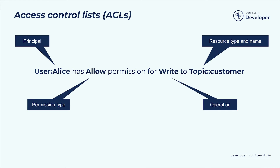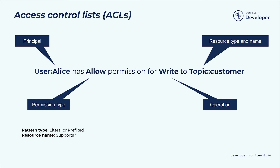The permission type determines whether the operation is being allowed or denied on behalf of the principal. Examples of operations include the ability to create or delete a topic or group, or write or read from a topic. Resource names are by default treated as literals, but you can specify that they should be treated as prefixes, which allows the ACL binding to match a subset of resources whose name begins with the specified prefix. You can also use a wildcard character to match all resources of a particular resource type, or to match all principals.